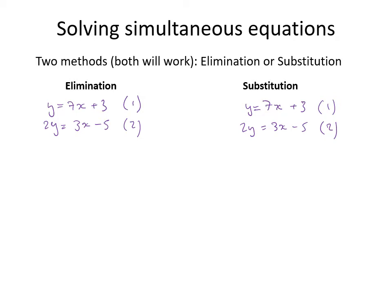For elimination, the idea is to make it so that subtracting one equation from the other eliminates one variable. The most obvious approach here is to multiply equation 1 by 2. Doing that — and we must multiply both sides — gives 2y = 14x + 6, which is still a valid equation.